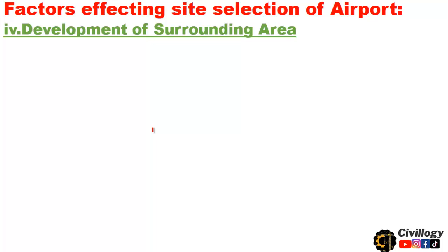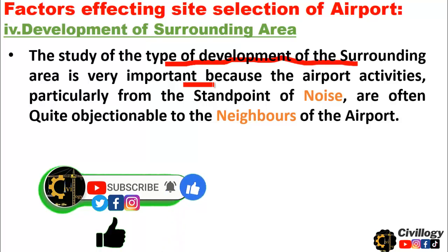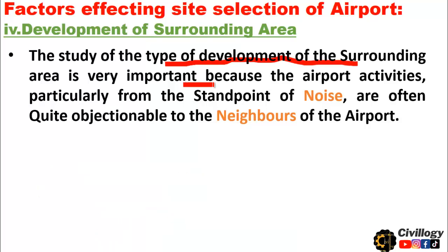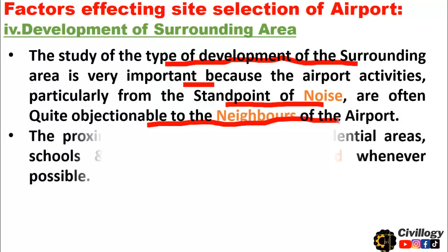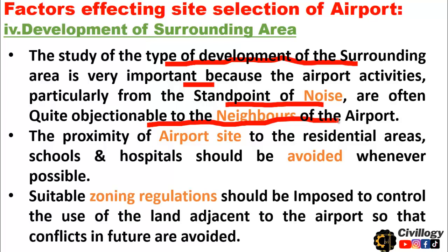The fourth point is development of the surrounding area. The study of the type of development of the surrounding area is very important because airport activities, particularly from the standpoint of noise, are often quite objectionable to neighbors of the airport. The proximity of airport sites to residential areas, schools, and hospitals should be avoided whenever possible. Suitable zoning regulations should be imposed to control the use of land adjacent to the airport so that future conflicts are avoided.